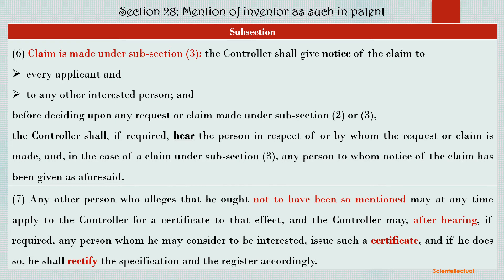Subsection 7: Any person who alleges that he ought not to have been mentioned as inventor may at any time apply to the controller for a certificate to that effect. The controller, after hearing any person whom he may consider to be interested, shall issue a certificate and, if he does so, will rectify the specification and the register accordingly. That is, in case of deletion of any name — a name that should not be mentioned in any application — through Form 8, the claim or request has been filed to the controller. Then the controller will call for a hearing, decide the issue, issue a certificate deleting such name, and rectify the specification as well as the patent register accordingly.